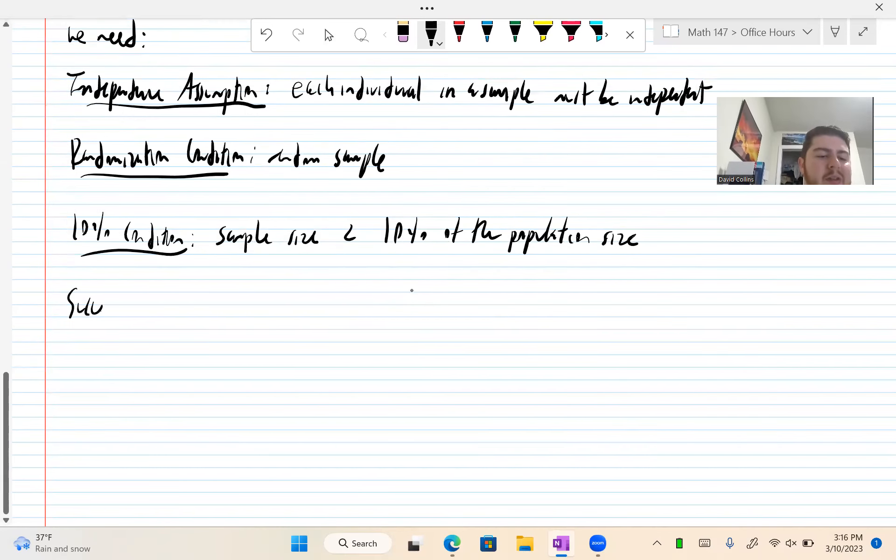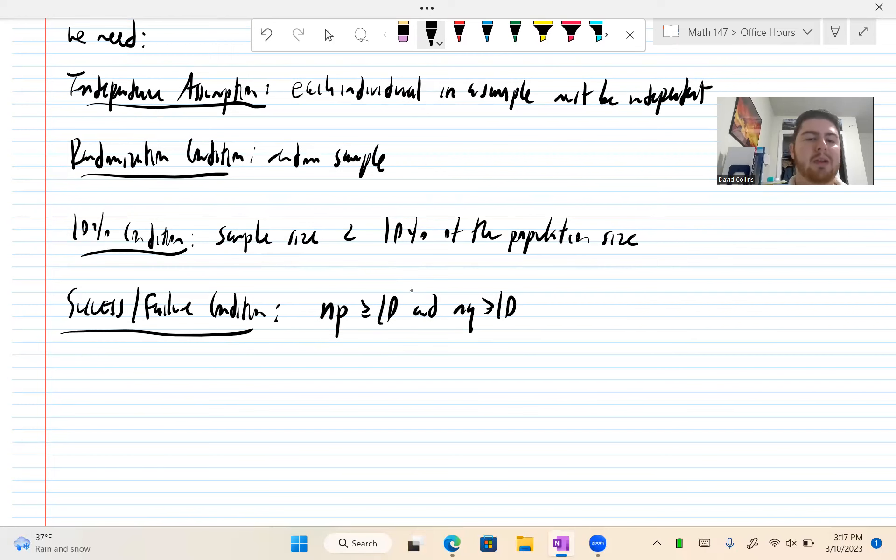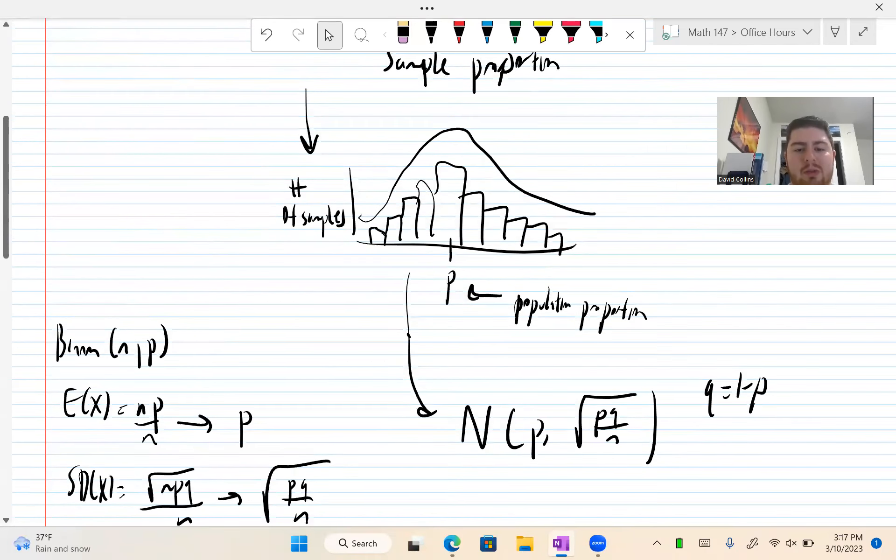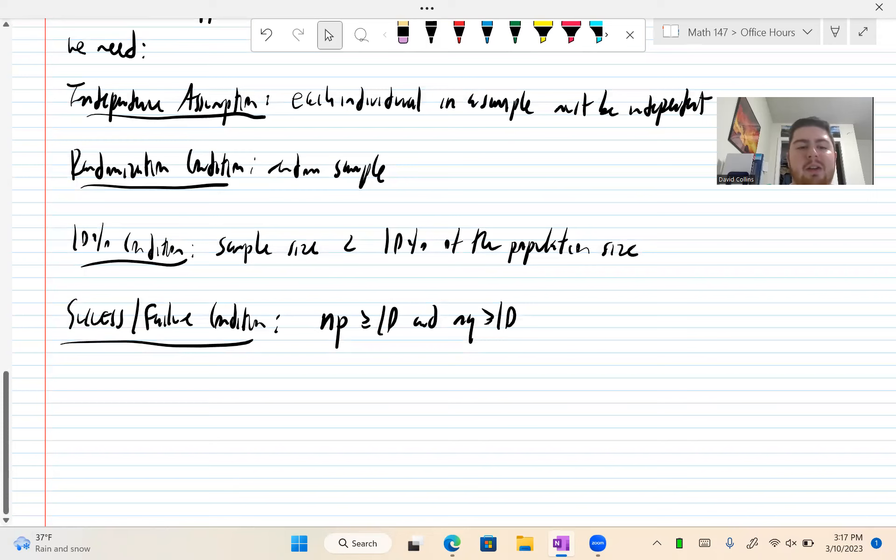Next is the success failure condition. This means that NP must be greater than or equal to 10, and NQ must be greater than or equal to 10. This is the first of many, what I like to call, normality conditions. By N times P and N times Q both being greater than 10 or equal to, that means we have a big enough sample that we know our distribution will look nice.